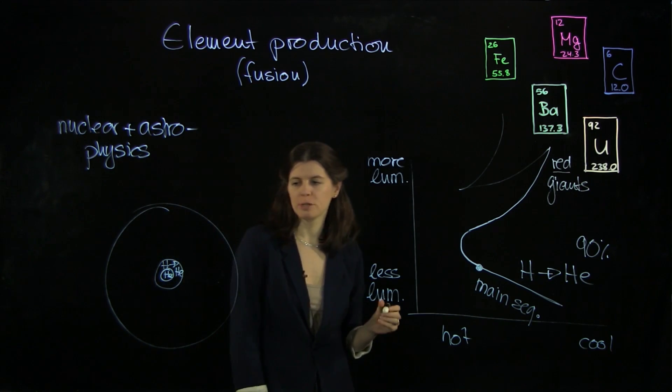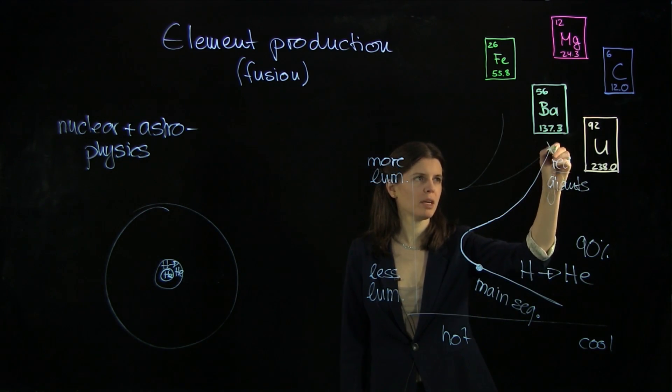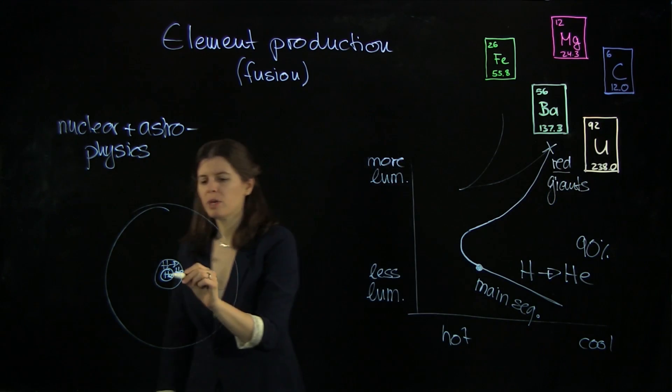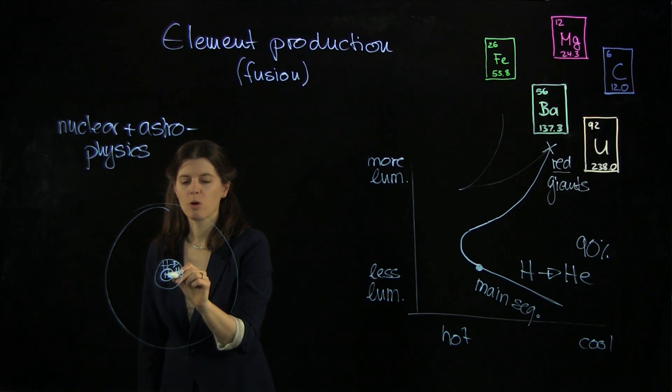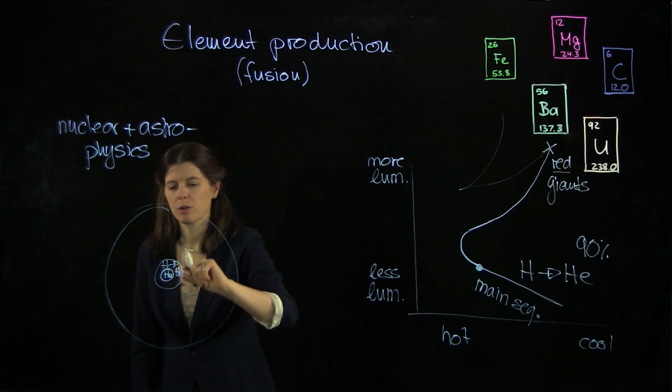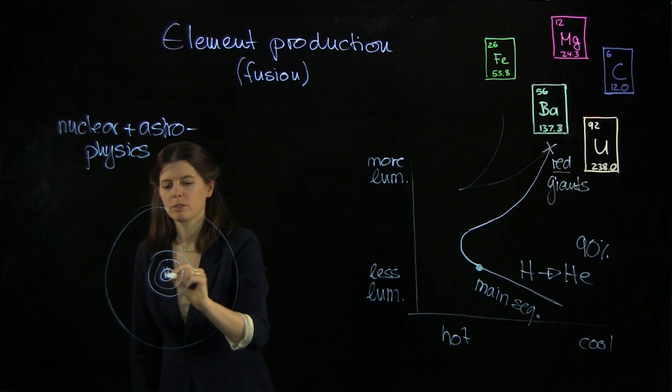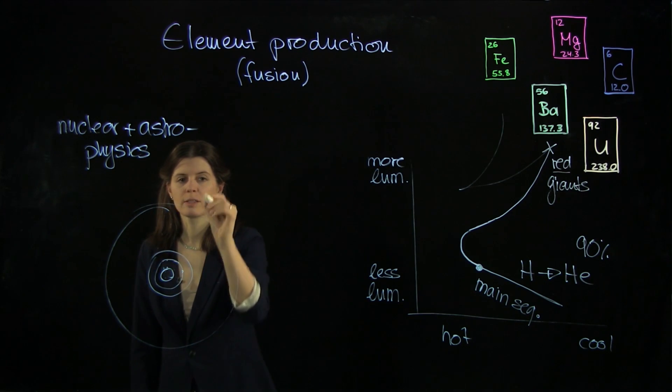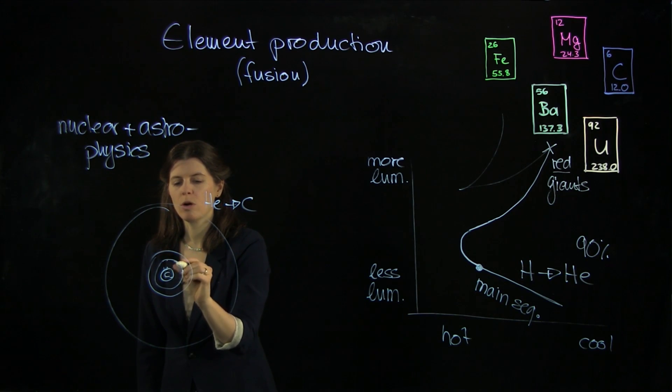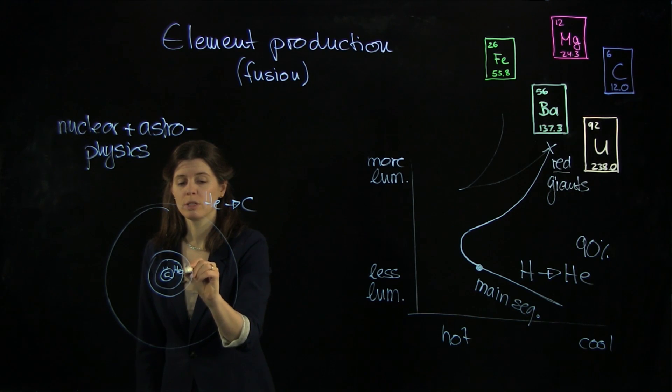And then up here we have something called the helium flash, which means the helium here in the core is now being converted to carbon. So we eventually get helium converted to carbon. Eventually we're going to get to a carbon core, and then we have helium burning further out and hydrogen burning yet further out.